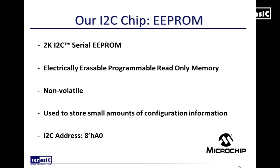Our slave device for today is an EEPROM located on our DE0 Nano. We're going to be using an EEPROM from Microchip — a 2 kilobit serial EEPROM, which stands for electrically erasable programmable read-only memory. These EEPROMs are non-volatile memories usually used to store small amounts of configuration information when the power shuts down, and our specific address today will be A0. I2C addresses are assigned by the manufacturer and each chip should have its own unique I2C address — important when you have multiple slaves on the same bus.